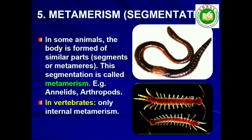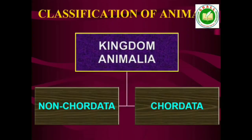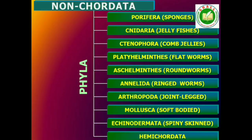5. Segmentation: In some animals, the body is externally and internally divided into segments with a serial repetition of at least some organs. For example, in earthworm, the body shows this pattern called metameric segmentation and the phenomenon is known as metamerism. 6. Notochord: Notochord is a mesodermally derived rod-like structure formed on the dorsal side during embryonic development in some animals. Animals with notochord are called chordates and those animals which do not form this structure are called non-chordates, for example, Porifera to echinoderms.